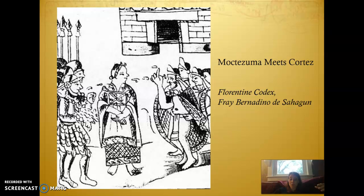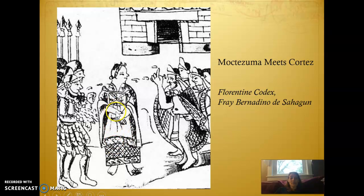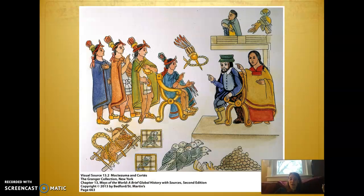She is kind of the in-between for the Aztecs and the Spanish. The blobs we see in between in the image are the words — translation going back and forth. There was somebody in Cortez's group who maybe spoke Spanish and Mayan, and La Malinche could speak Mayan but also Nahuatl and was able to learn Spanish. She was able to intercede and also helped Cortez understand the diplomacy required in various settings.